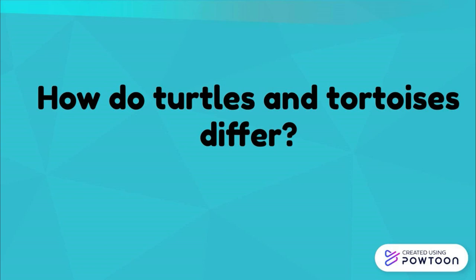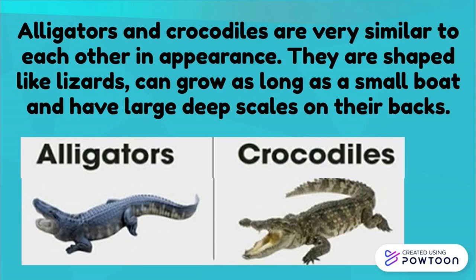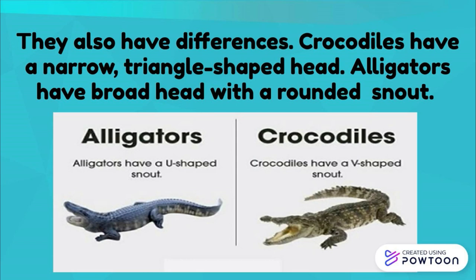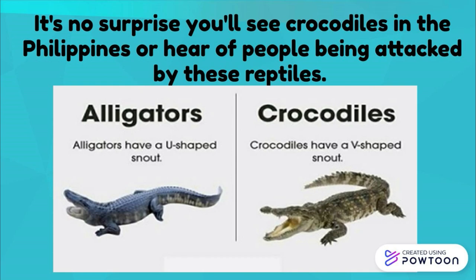Turtles have flat, streamlined shells. Most turtles are aquatic and thrive in ponds, lakes, rivers, or oceans, returning to land only to lay eggs. Tortoises, on the other hand, are terrestrial. Alligators and crocodiles are very similar in appearance — shaped like lizards, they can grow as long as a small boat and have large, deep scales on their backs. Crocodiles have a narrow, triangle-shaped head, while alligators have a broad head with a rounded snout. These reptiles are found in tropical areas and are mostly aquatic.